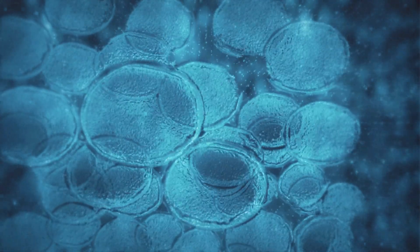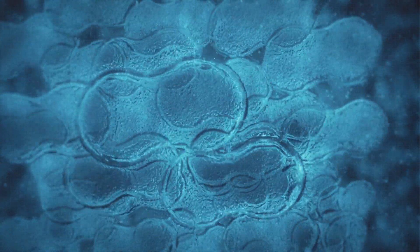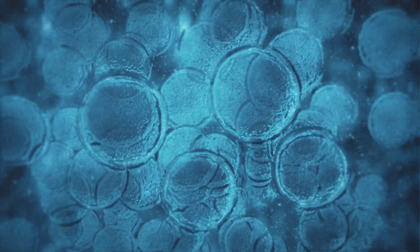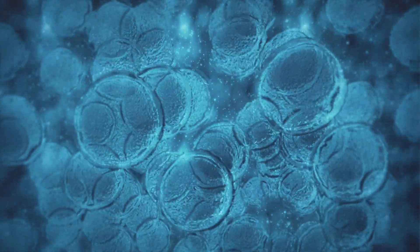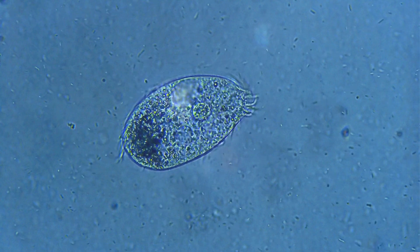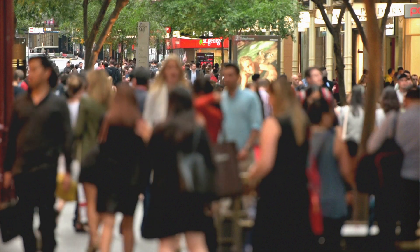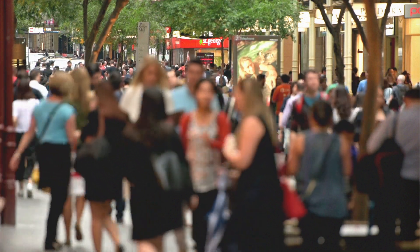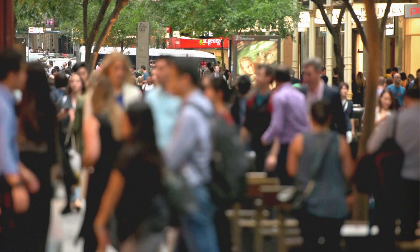One possibility is that the Great Filter lies in the early stages of life. This could mean that the leap from non-living materials to living organisms is incredibly rare, or that it's extremely uncommon for simple life to evolve into complex multicellular organisms. If this is true, humanity has already overcome the Great Filter, making our existence an extraordinary and rare achievement.